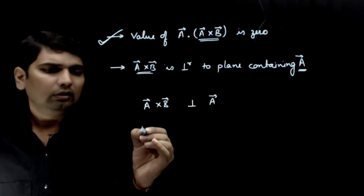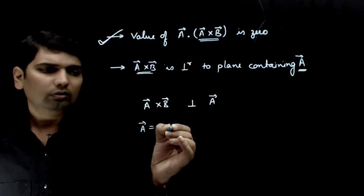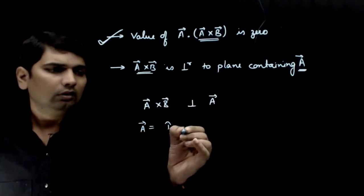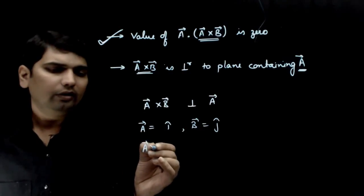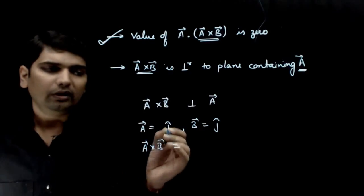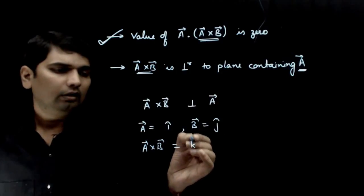Let's consider an example. A vector is equal to i cap, B vector is equal to j cap. Then A vector cross B vector will be simply i cap cross j cap equals k cap.